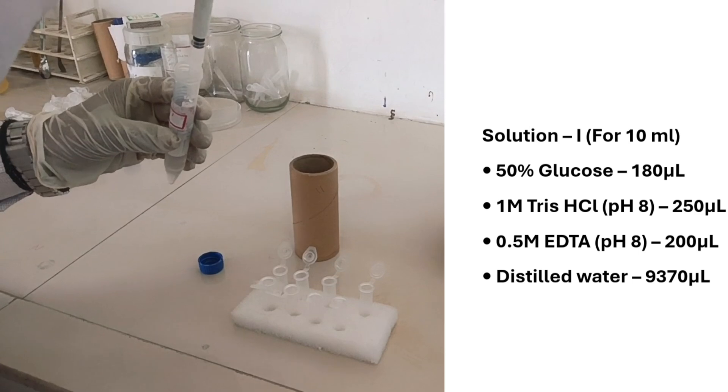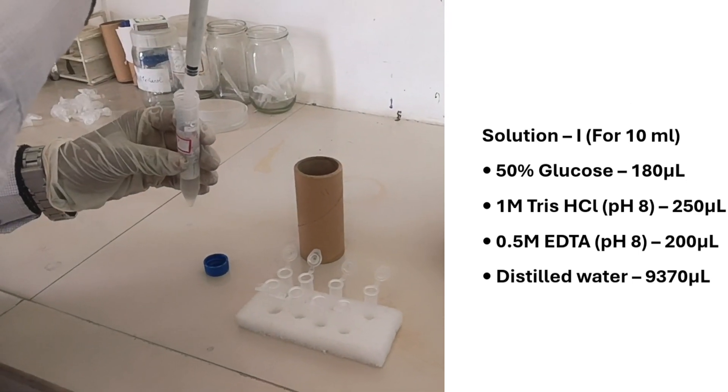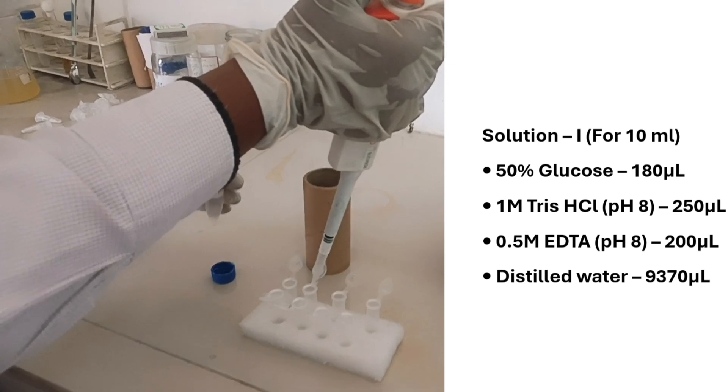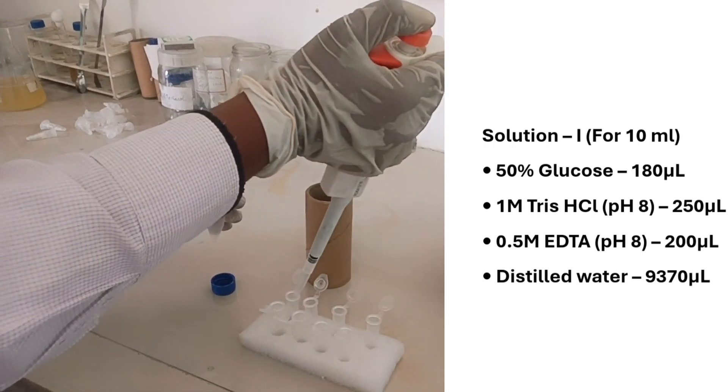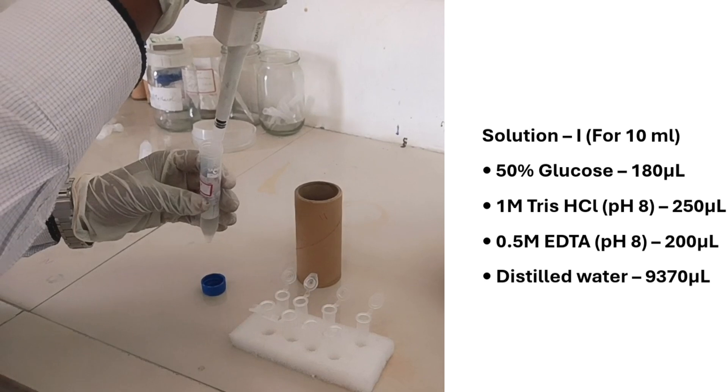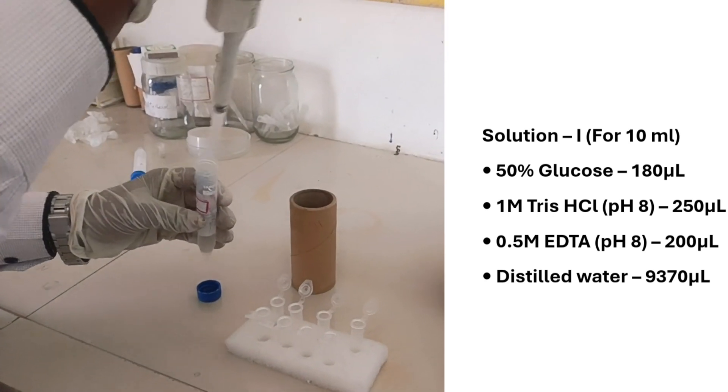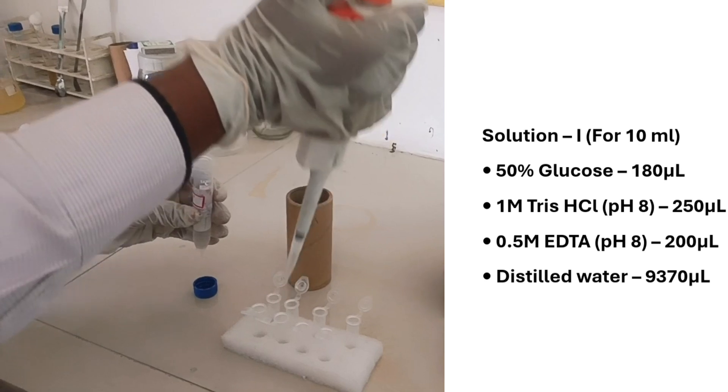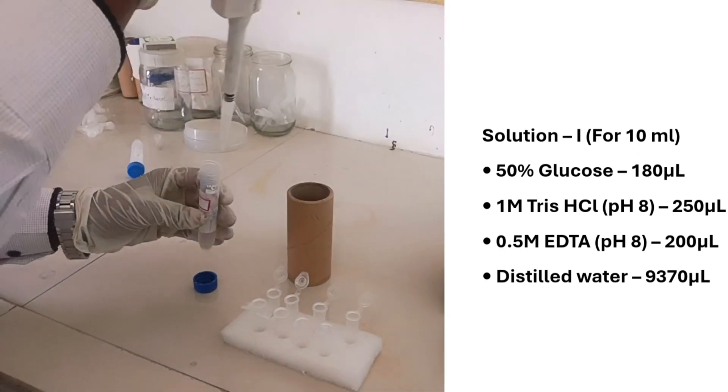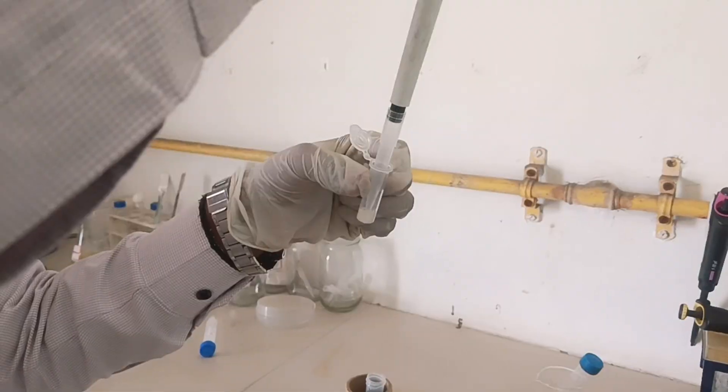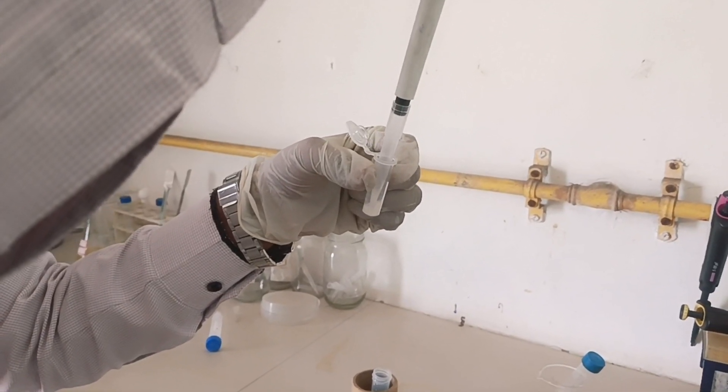After centrifugation, add 200 microliters of chilled solution 1 which has been prepared for 10 ml by adding 180 microliters of 50% glucose, 250 microliters of 1M Tris-HCl pH 8, 200 microliters of 0.5M EDTA pH 8, and 9.37 ml distilled water. After adding solution 1, resuspend the pellet using a pipette.